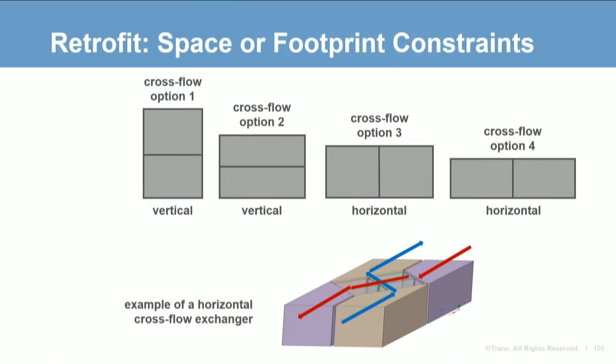SAM has a high velocity option that uses wider spacing to allow more airflow but sacrifices some latent recovery. Wheels also have a wider spacing media option allowing more airflow but with reduced sensible and latent effectiveness, though these options can sometimes help these technologies fit. Metal plate exchanger, membrane, and SAM can all be configured in either a vertical or horizontal orientation and can be put together in different aspect ratios. A wheel cassette is square, so whether airflows are side by side or top and bottom, the dimensions won't change.